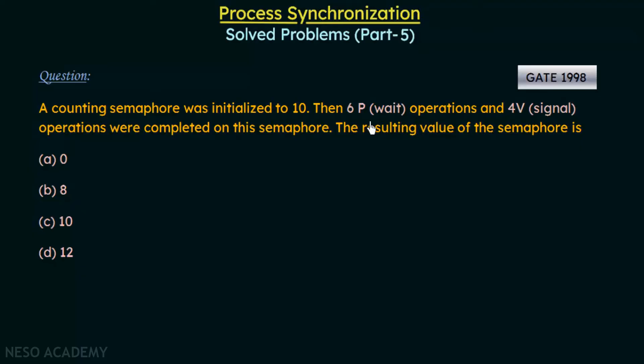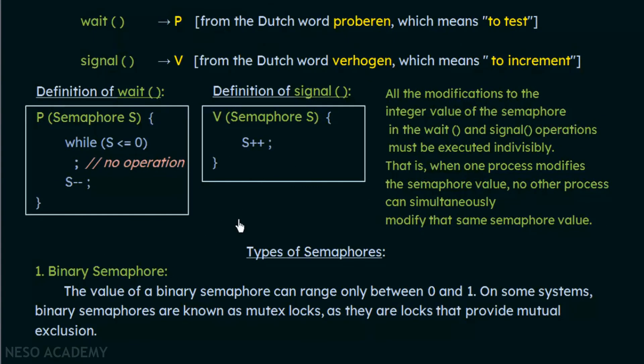Let's just recall what is the meaning of this P and V. We have already studied this. In semaphores we have already studied the meanings of the wait and the signal operations. Wait is denoted by P, and signal is denoted by V.